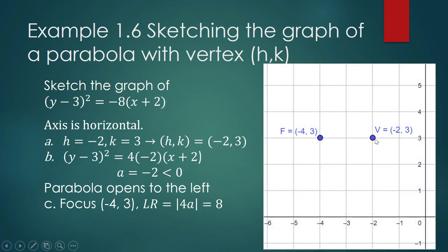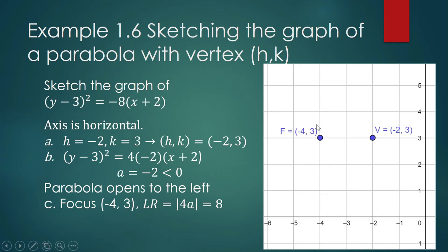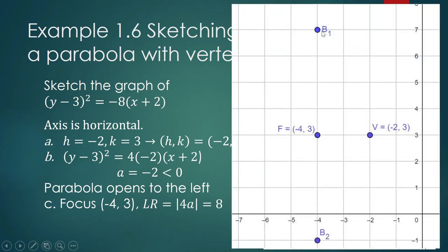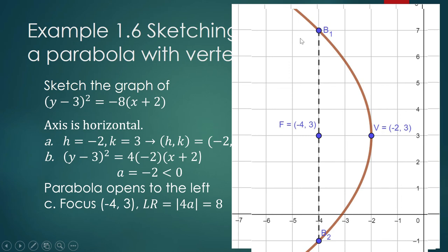Our vertex is at (−2, 3). The directed distance to the focus is −2, so we move 2 units to the left to reach the focus. The length of the latus rectum (focal width) is the absolute value of 4 times a, which is |4 × (−2)| = 8. From the focus, count 4 units up to get the endpoint (−4, 7) and 4 units down to get (−4, −1). With these endpoints we can trace the parabola.